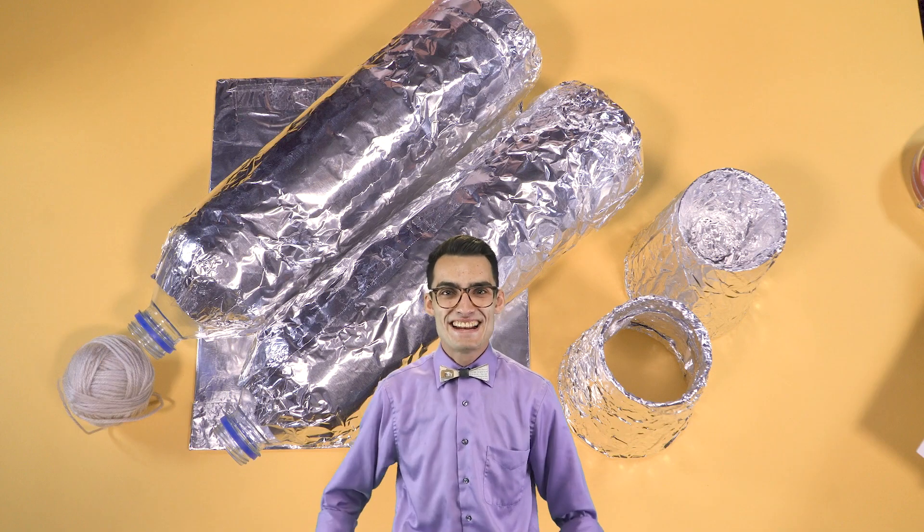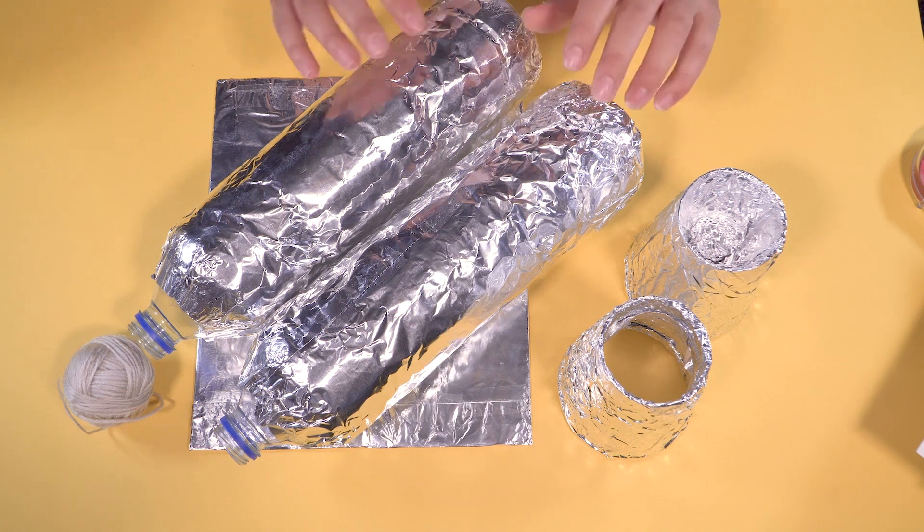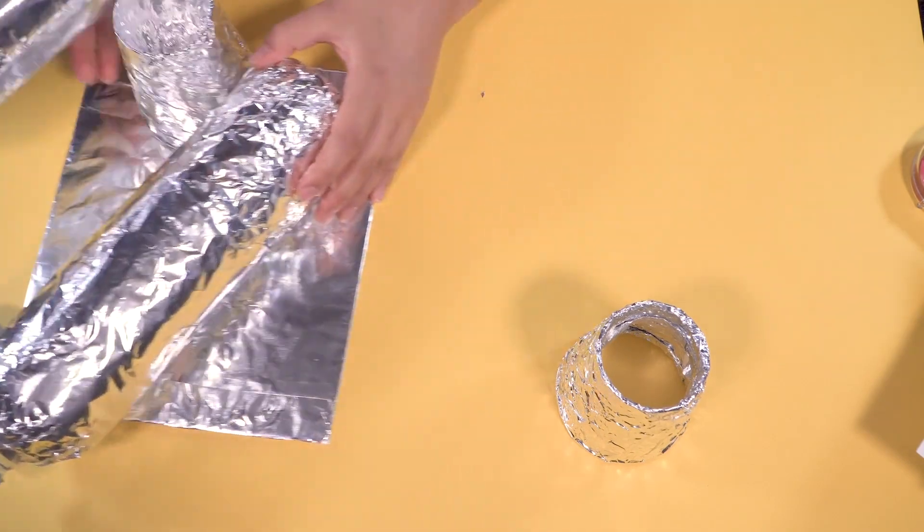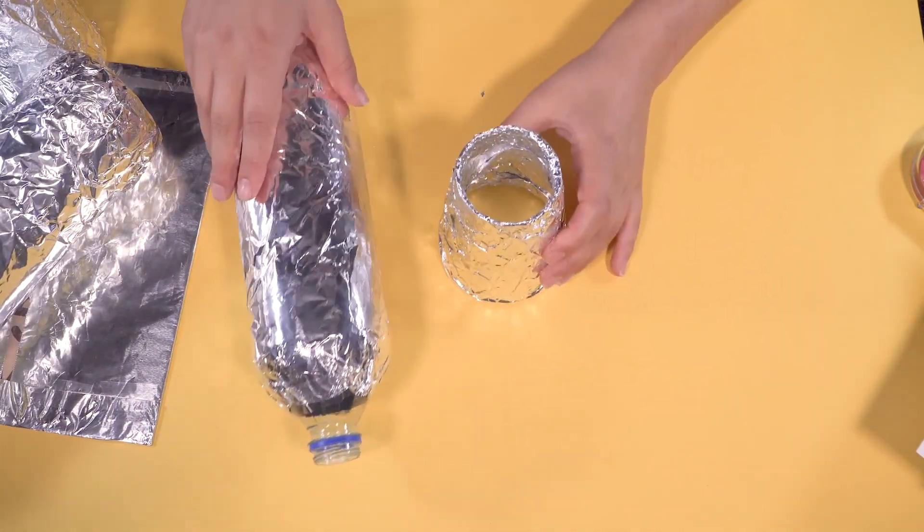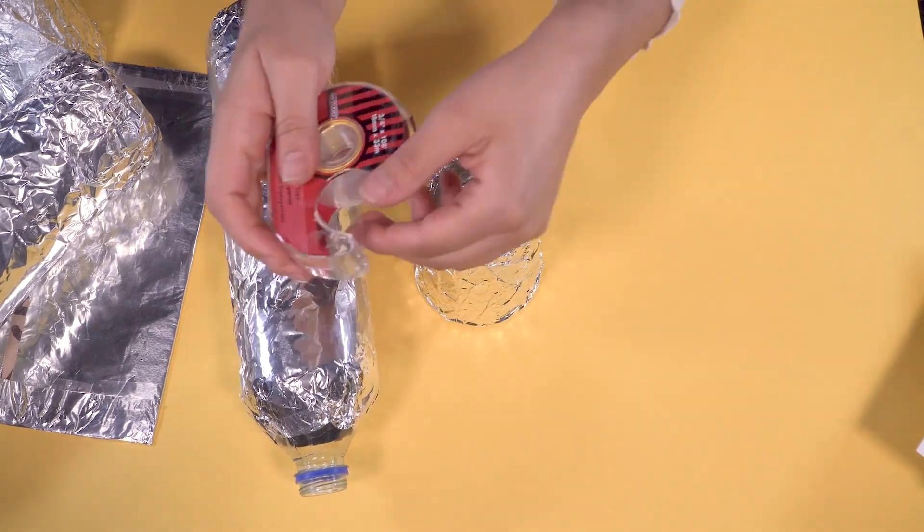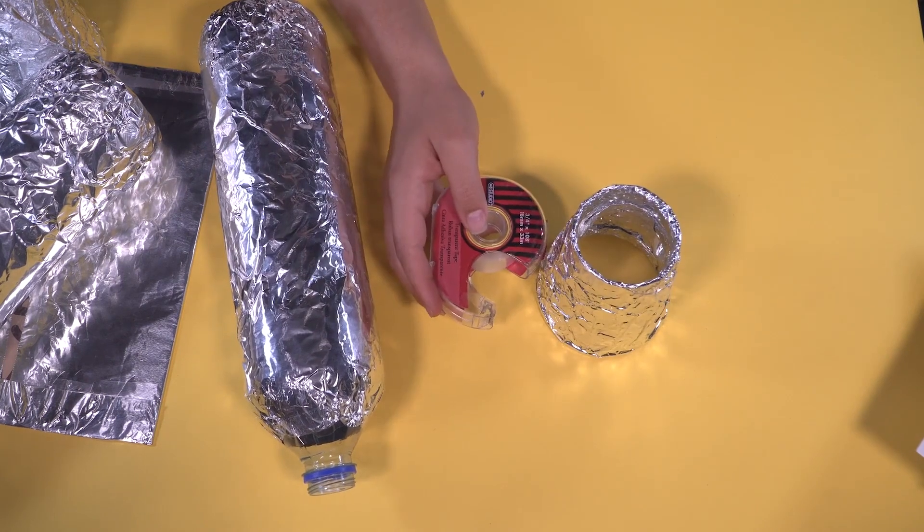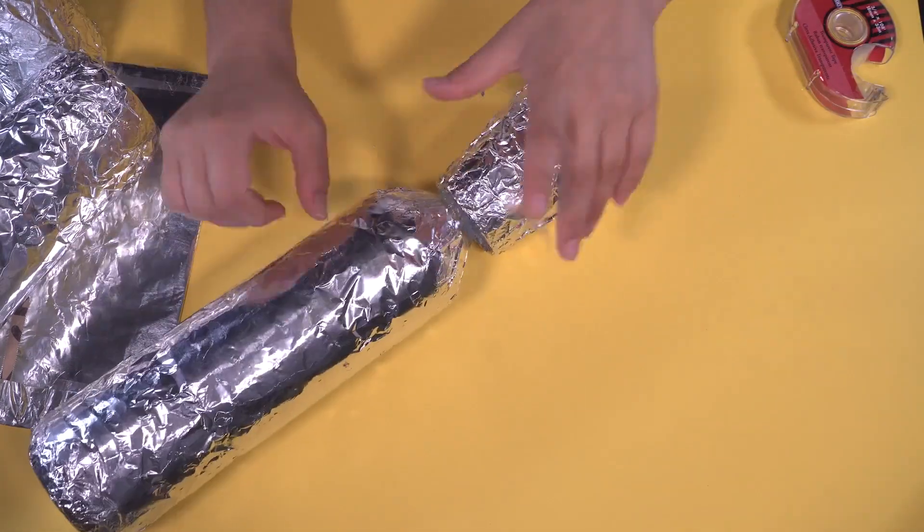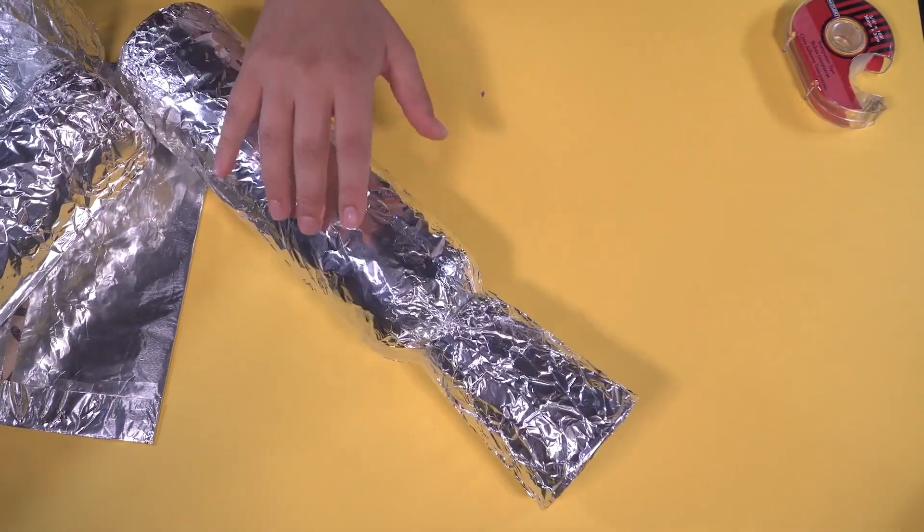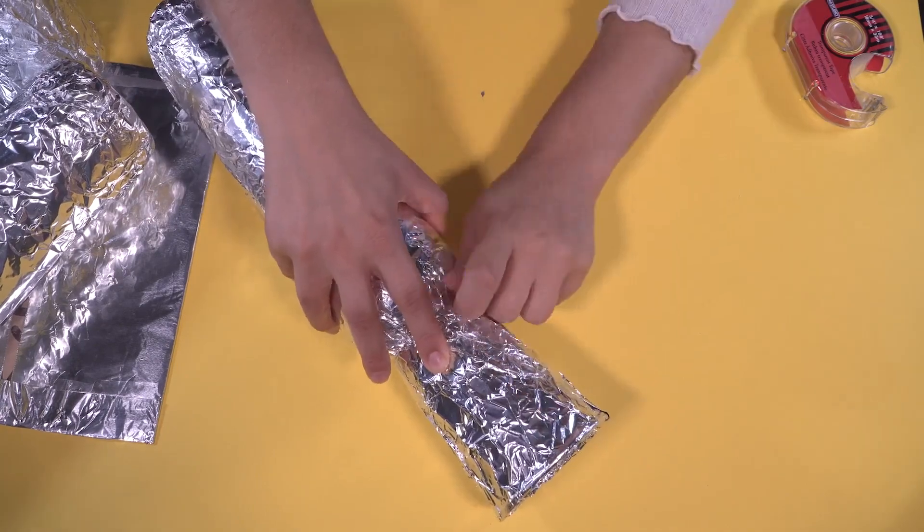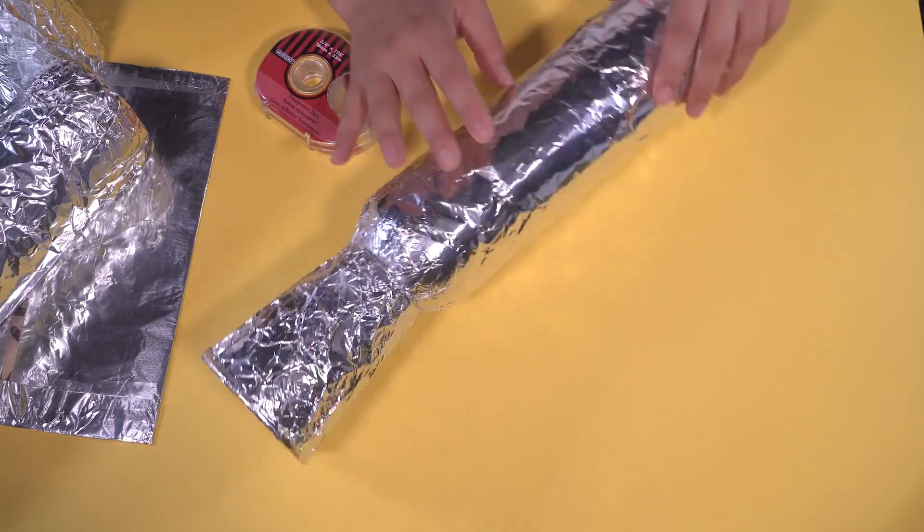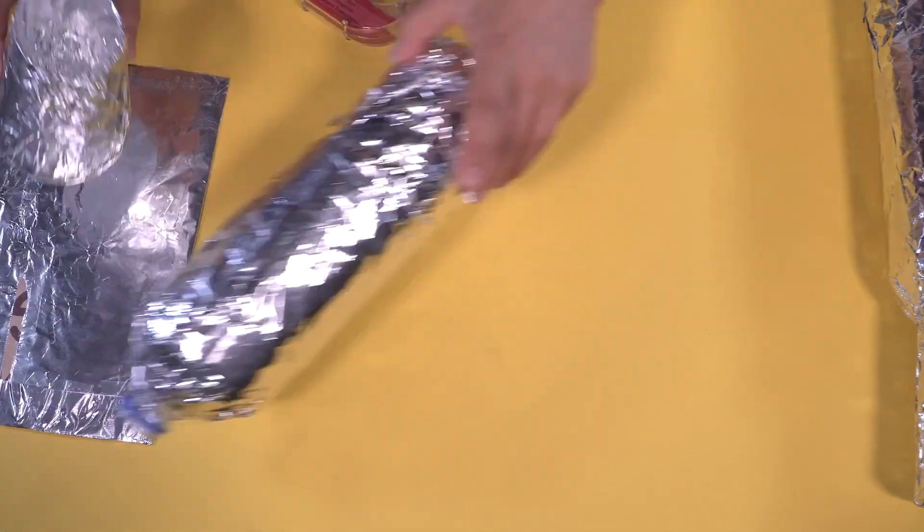Hoo boy! Now we can assemble our jetpacks! First, we will attach the cups to the bottles using tape. Cut a few pieces of tape and put them aside. Then, hold your cup over the spout of the bottle and hold it in place using the tape. Repeat this step for the other bottle.